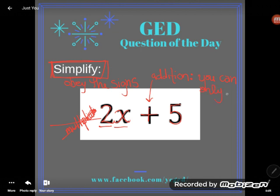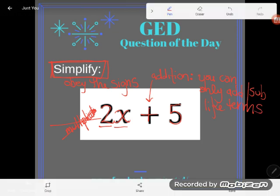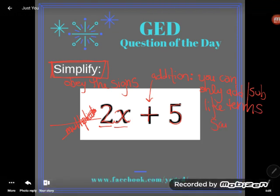In algebra, we call those things like terms. Write this down somewhere. This is so crucial to the GED, and this is the reason I wrote this problem. I want students to understand this. You can only add and subtract like terms. Like terms have the same variable portion.